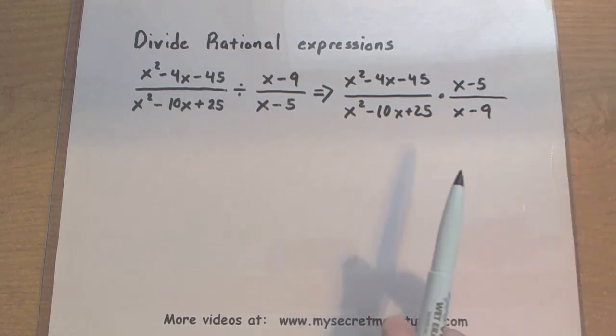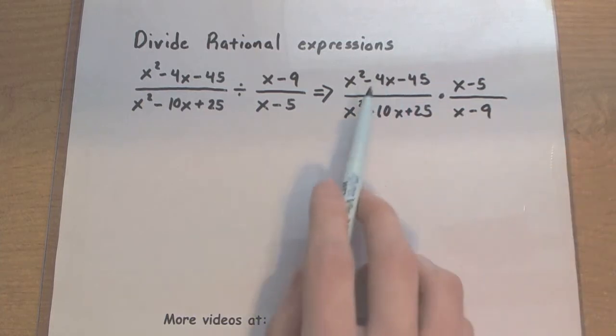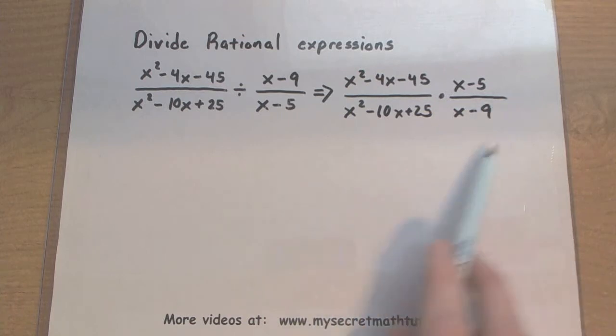Now to make this process go a lot simpler, we want to factor these fractions as much as possible, cancel out any common terms, and then multiply what's left over.